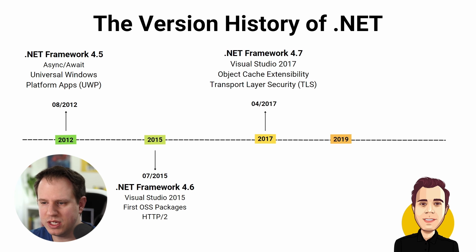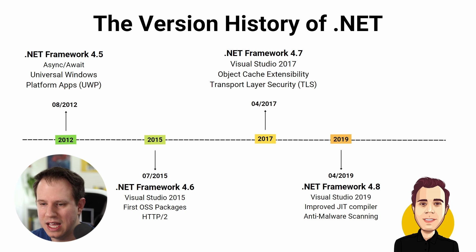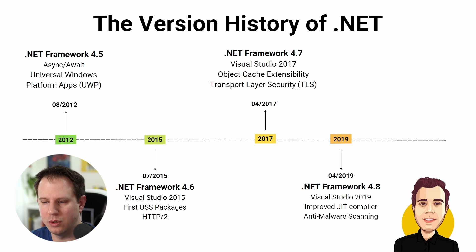The .NET Framework 4.7 was released on April 15th, 2017, together with Visual Studio 2017. It included a few new features such as Object Cache Extensibility and improved Transport Layer Security (TLS), but nothing groundbreaking. The .NET Framework 4.8 was released on April 18th, 2019, and was the last release of the .NET Framework era. The .NET Framework 4.8.1 was released on August 9th, 2022, and was the last patch version at the time of recording.